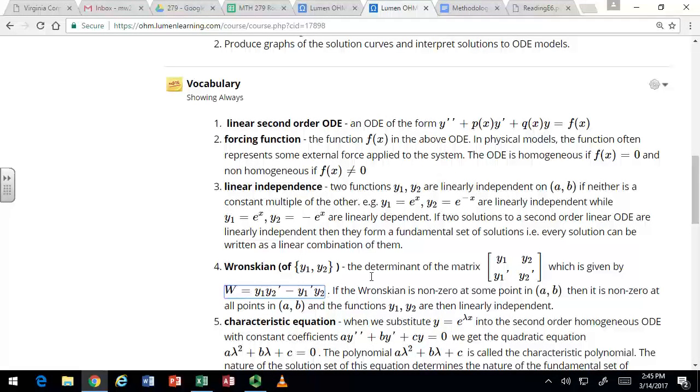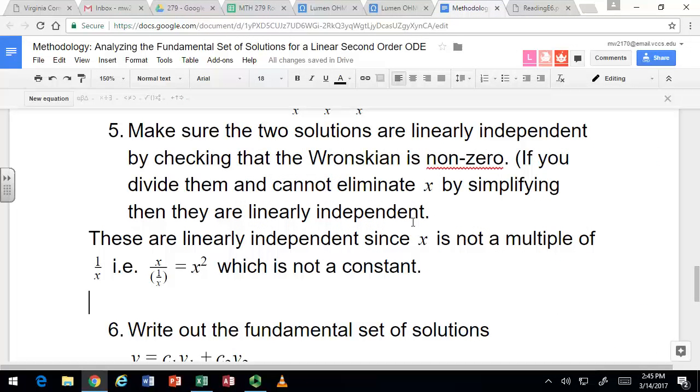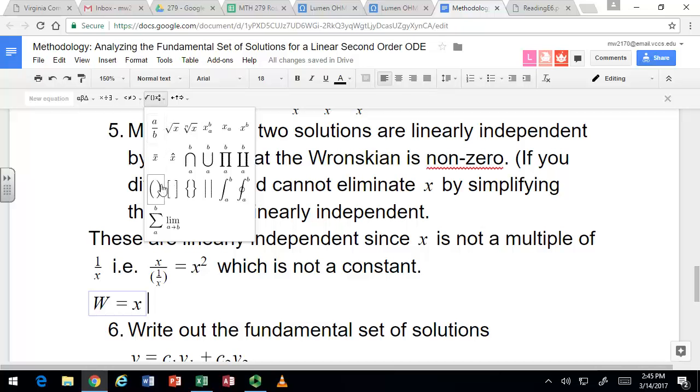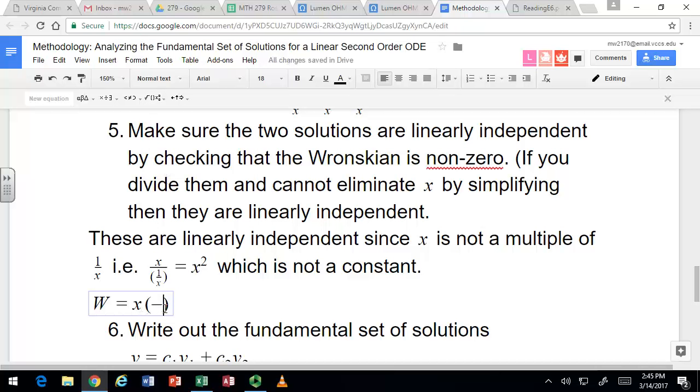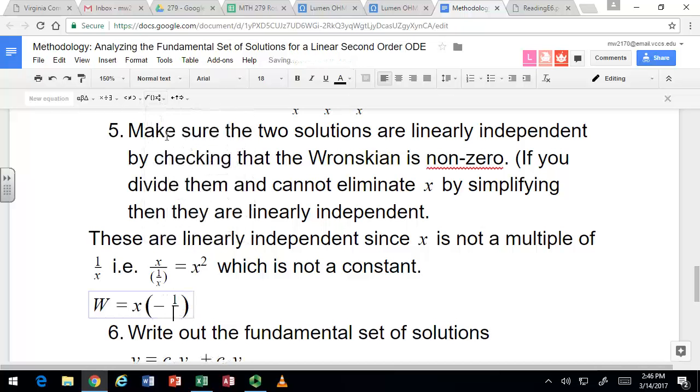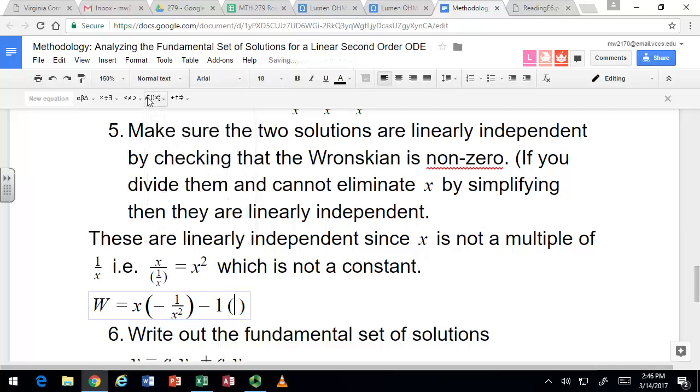You want to make sure that that's non-zero on whatever interval of validity you're looking at this thing on. So let's go ahead and set that up. Is it German or Wronskian? Probably. So we would have x times -1/x². So there's the first solution times the derivative of the second minus the derivative of the first times the second. And we can simplify this a little. It should be -2/x.